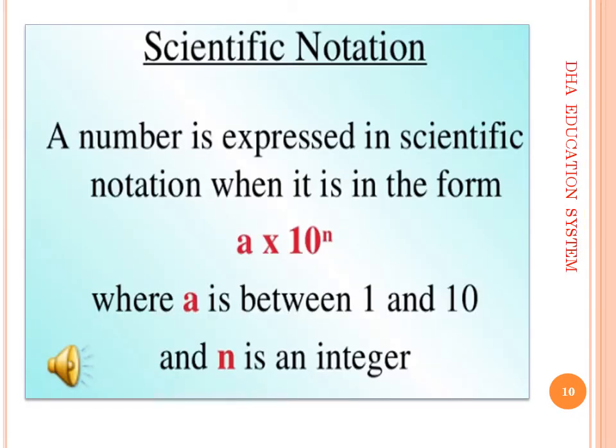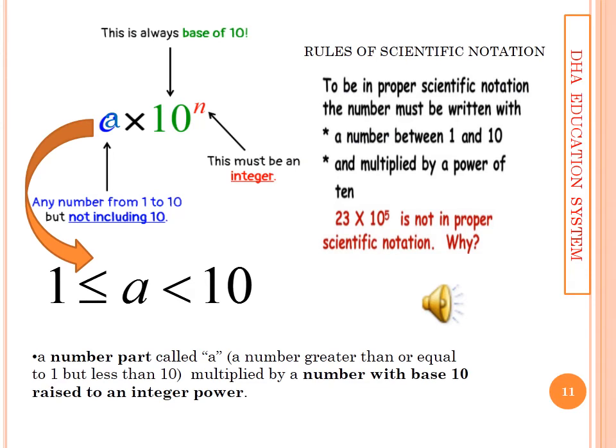A number is expressed in scientific notation when it is in the form of a into 10 power n, where a is between 1 and 10 and n is an integer. See the three different parts in general form, a into 10 power n, where a is any number from 1 to 10 but not including 10. Base will be always 10 and power can be positive or negative. Just keep this rule in your mind.